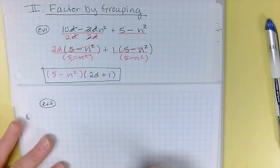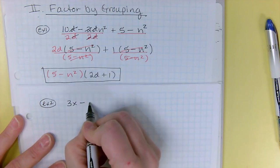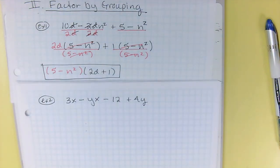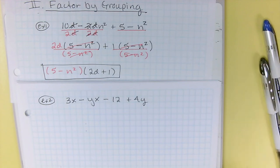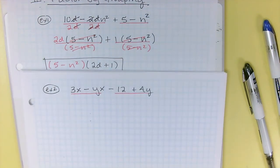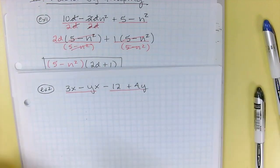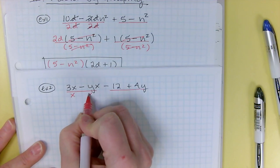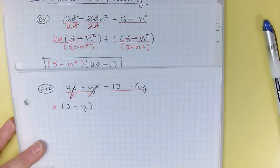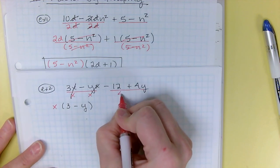3x minus yx minus 12 plus 4y. Most of the time when you try this process, you group them 2 and 2 the way they are. But the fact of the matter is you can put them in any order you want. So if you're grouping them 2 and 2 and nothing is coming out, you might want to reorder them and try again with different pairs. There's two ways this can go. So let's divide out what they have in common. The first one, first pair, they both have an x. So x goes to the front. And I've got 3 minus y.